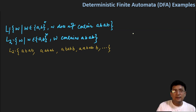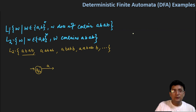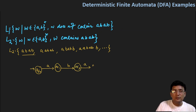Now, if I design the automata for this, I will first design the automata for the smallest string. So this DFA will start with state q0. On 'a' I will move to q1, with 'b' I move to q2, with 'a' I move to q3, and with 'b' I move to q4, which is the final state.